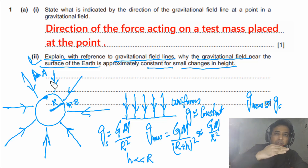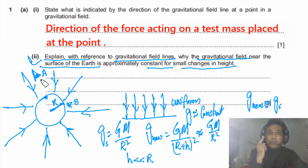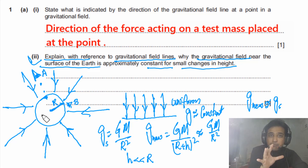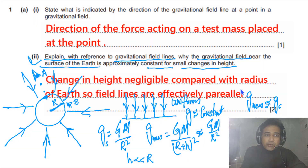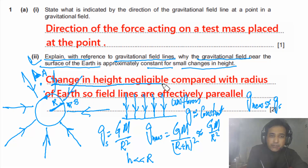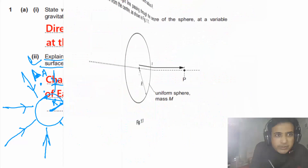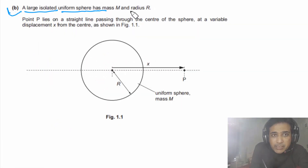Observer A at a larger distance sees a non-uniform gravitational field — g varies from point to point. But observer B, very close to the surface, can treat the field as uniform because h is very small compared to R. The answer: change in height is negligible compared to the radius of Earth, so field lines are effectively parallel and the field is uniform.